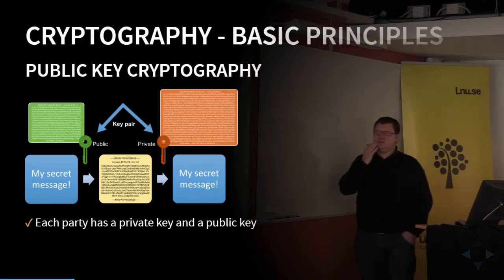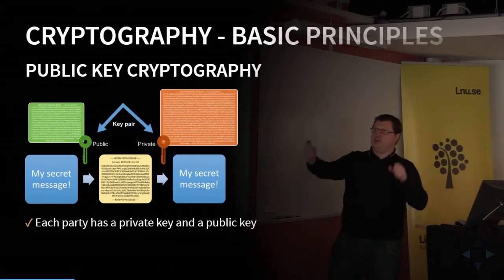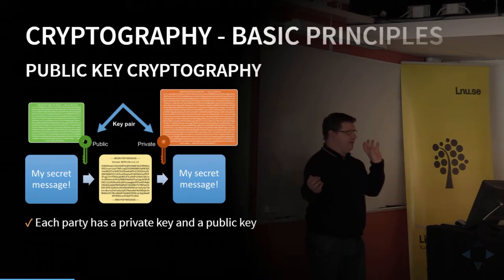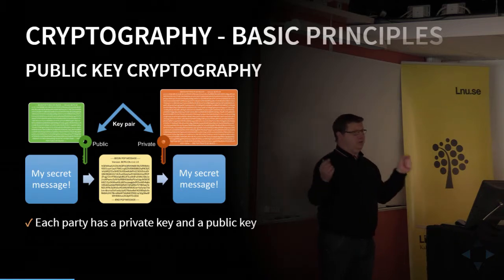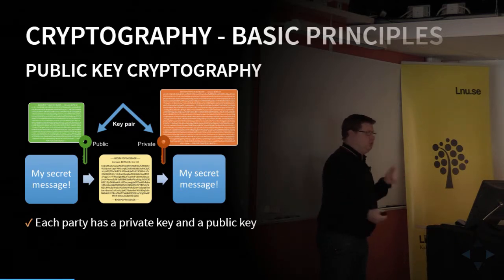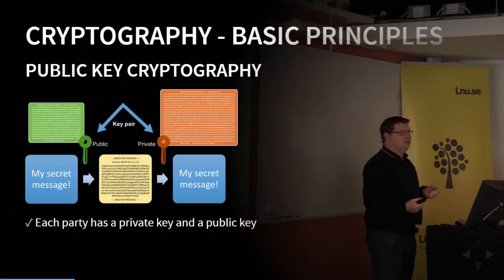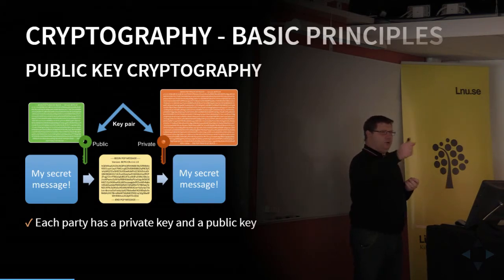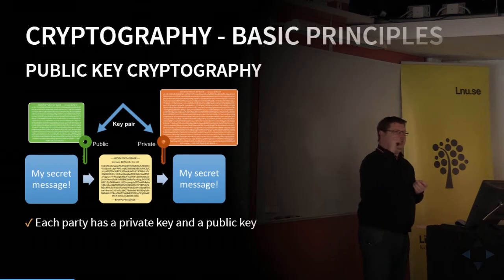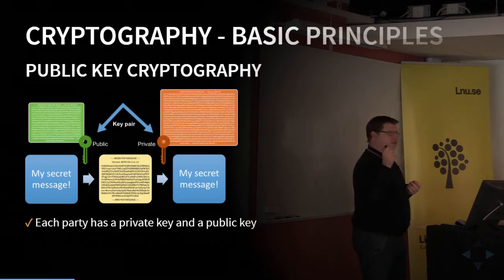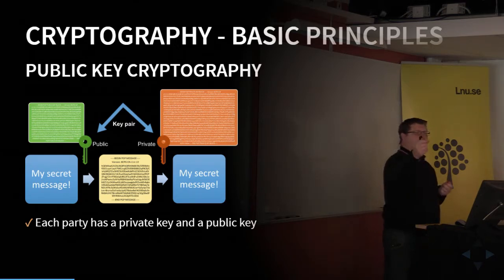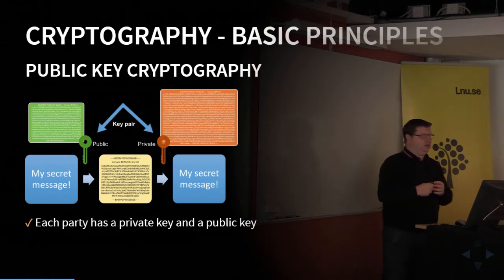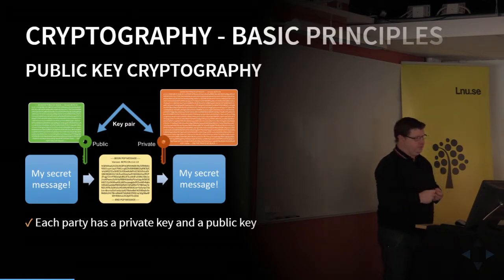If we want two parties to communicate with each other, they both need to have a set of keys — both should have one public and one private key. Then they distribute the public key to the other party. When sending a message, they encrypt with the other party's public key, and the receiver decrypts with their private key.